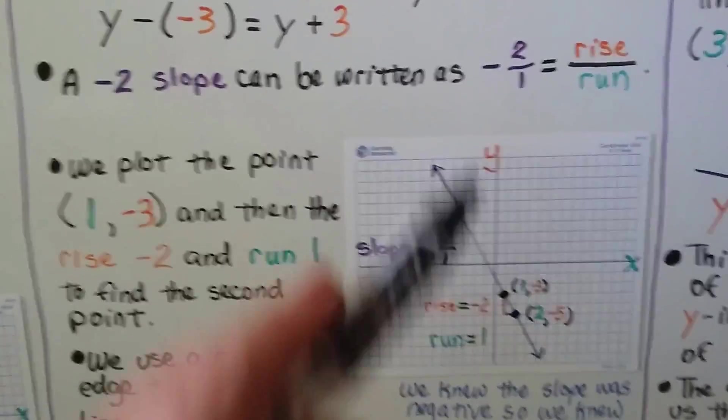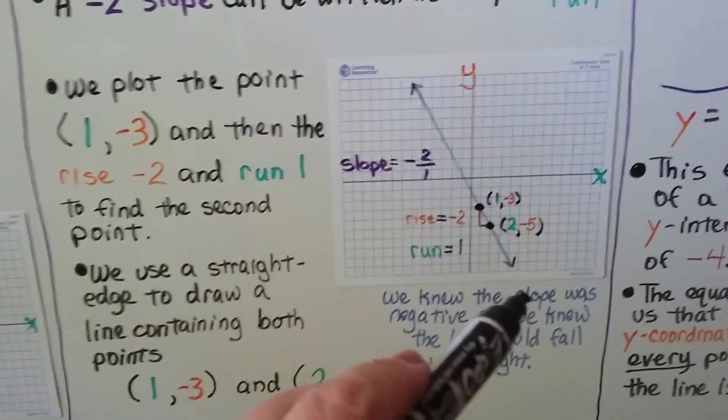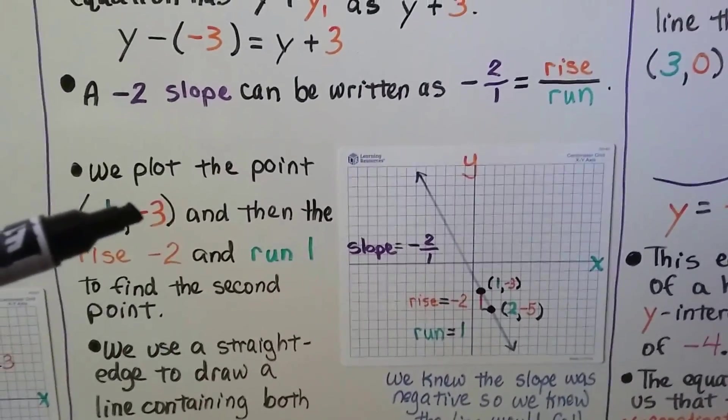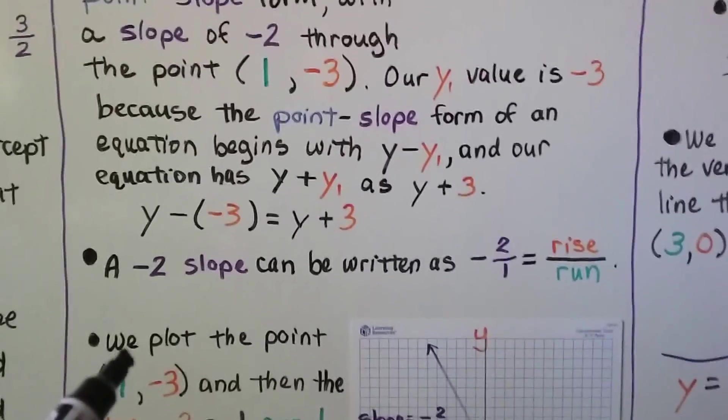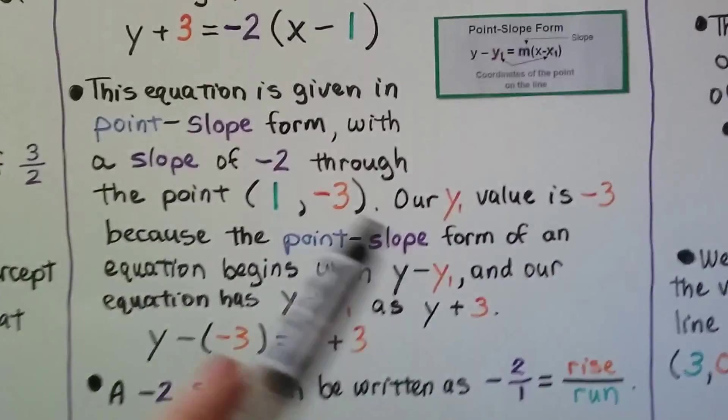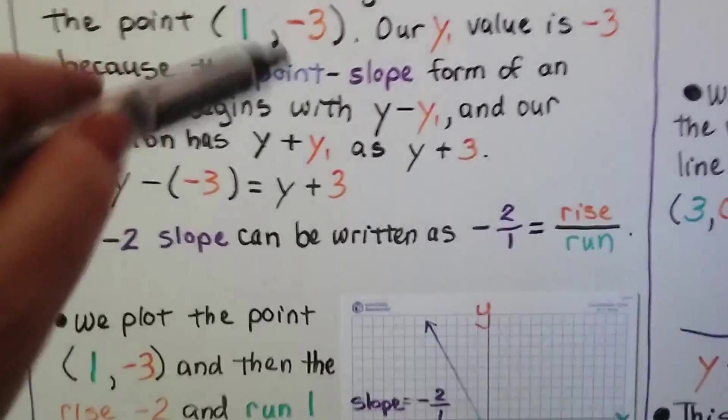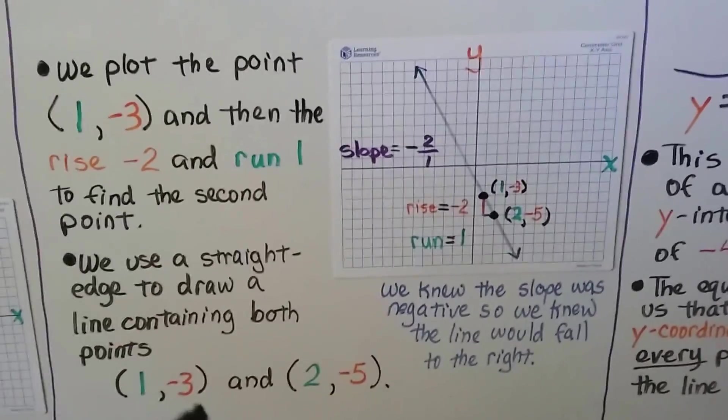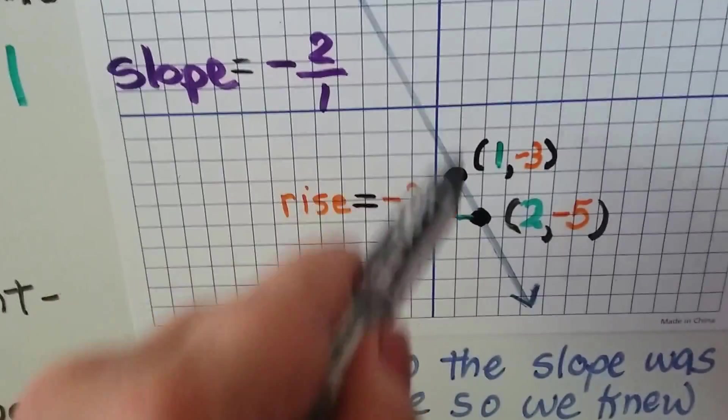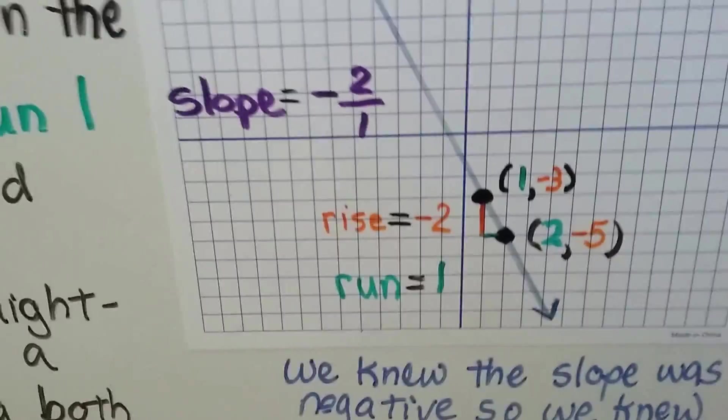It's a negative, so knowing that this slope is negative, we know the line is going to fall to the right. We plot the point 1 for x and negative 3 for y. If we look at the equation, we've got 1 for x and this negative 3 for our y in order for that to be positive. So that's our ordered pair. We plot (1, -3). 1 for x would be right here and negative 3 for y would be down here.